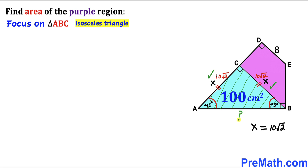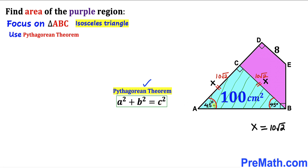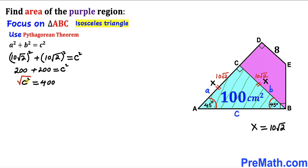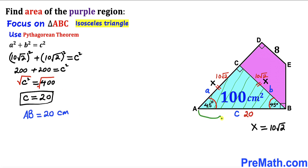Now let's calculate side length AB using the Pythagorean theorem: A squared plus B squared equals C squared. Here A and B are each 10√2, so we get (10√2)² plus (10√2)² equals C squared. Simplifying and taking the square root of both sides, C turns out to be positive 20 centimeters. So AB equals 20 centimeters.